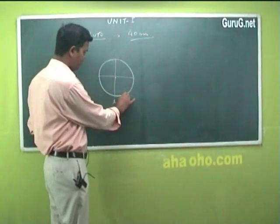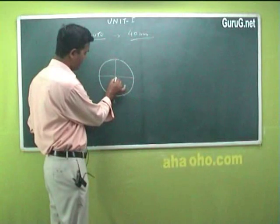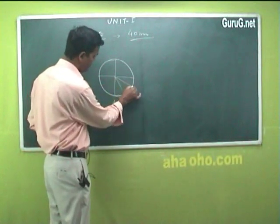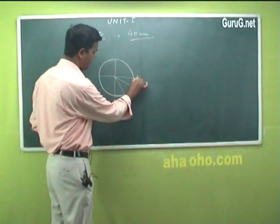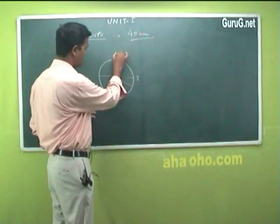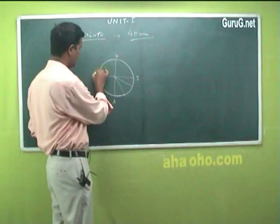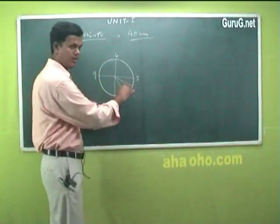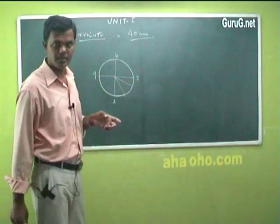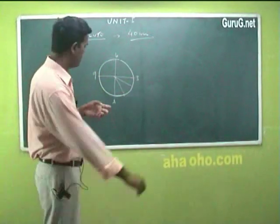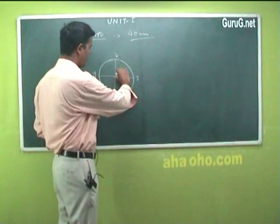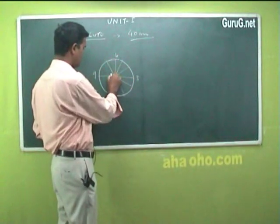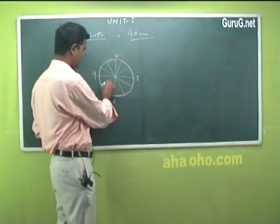From the base point A, you take point 1, then point 2, this is 3, this would be 6, so this would be 9, and then 12. You can divide into any equal number of parts like this.